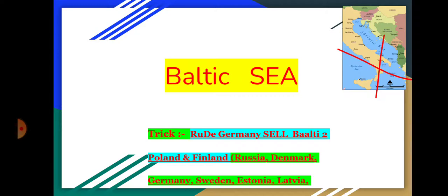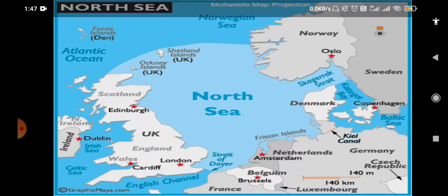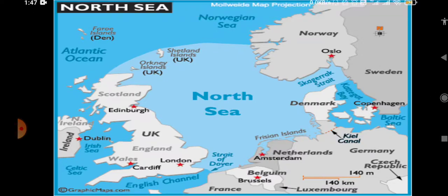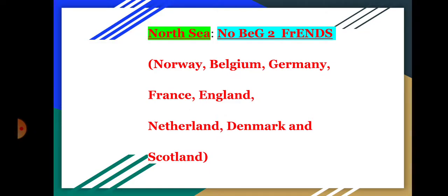Let's go back to North Sea. Have a look — there is the UK, then Norway. This whole map is confusing with so many countries. So let's get back to the trick. Please have a look and note it down — the mnemonic is 'NOBGFENDS', standing for Norway, Belgium, Germany, France, England, Netherlands, Denmark, and Scotland.